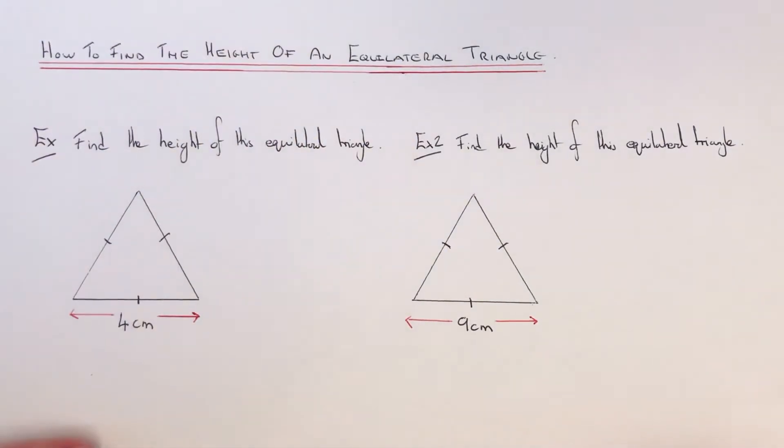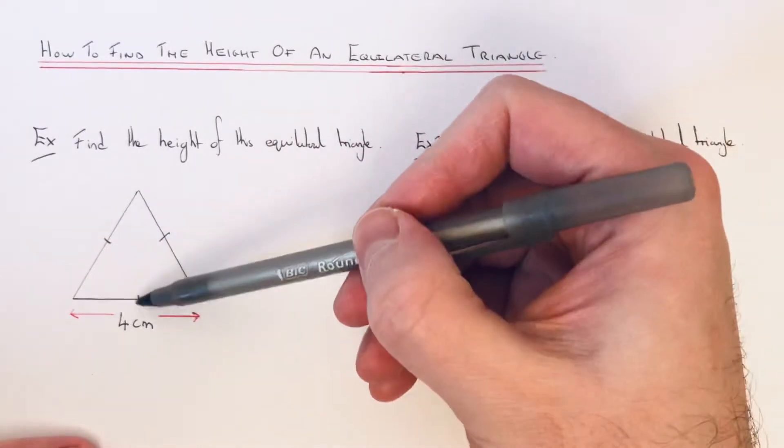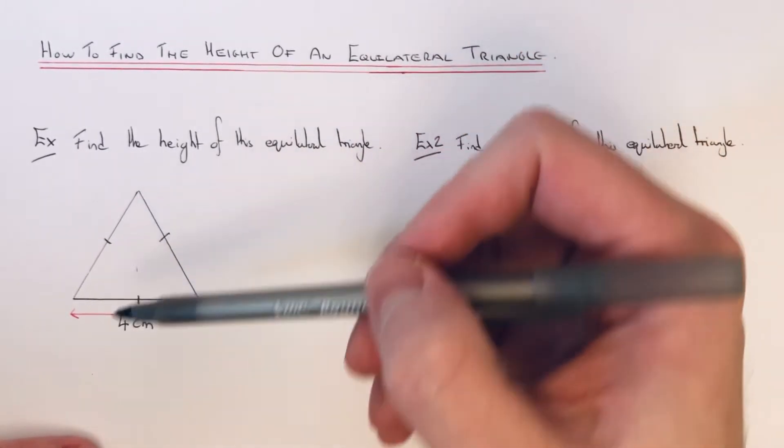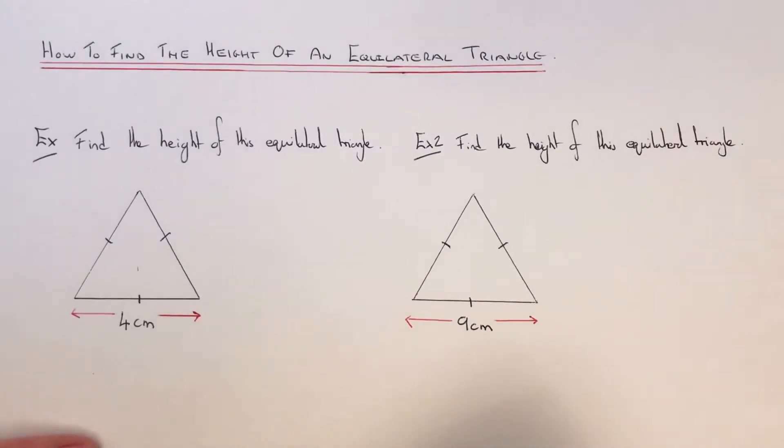Hi guys, welcome back. This is Maths 3000. Today I'm going to show you how to find the vertical height of an equilateral triangle. An equilateral triangle has three equal side lengths, so let's have a look at the first example.